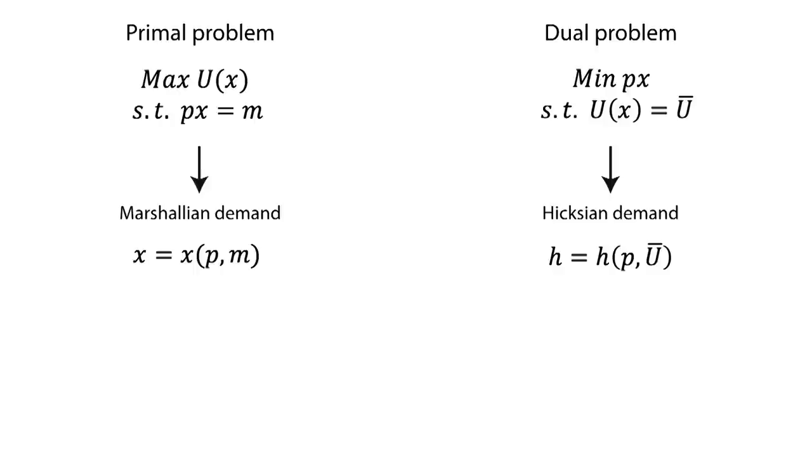Now, if we substitute a few variables, we can come up with the indirect objective functions of each problem. On the one hand, if we substitute the optimal variables in the primal problem, we obtain the indirect utility function, being this function u bar, that specifies utility as a function of prices and income. It's worth mentioning that the indirect utility function is homogenous of degree zero in prices and income.